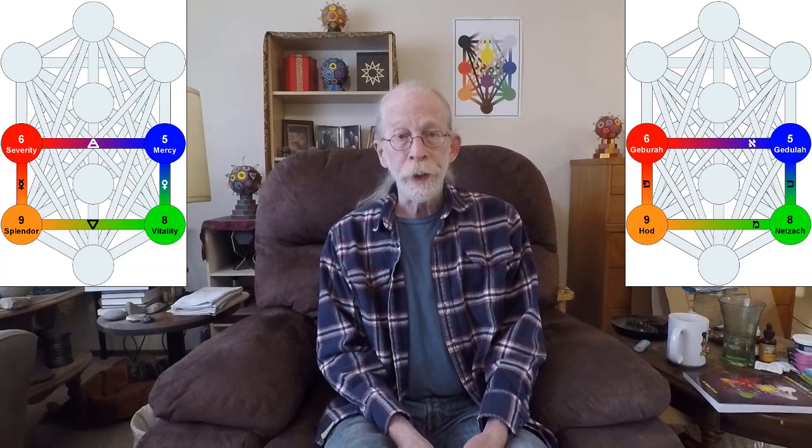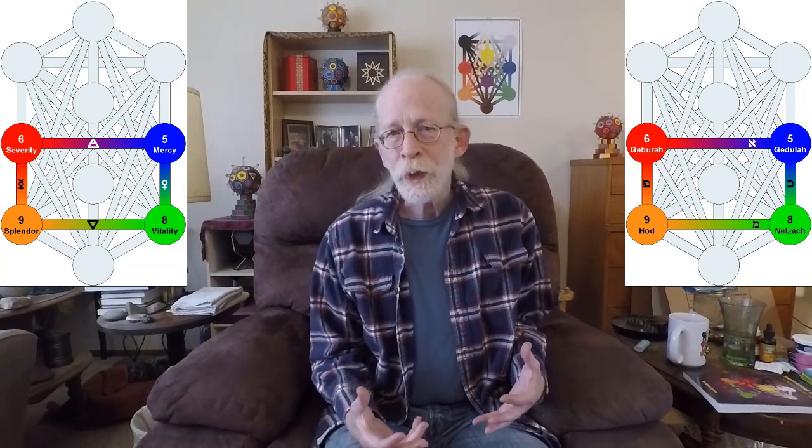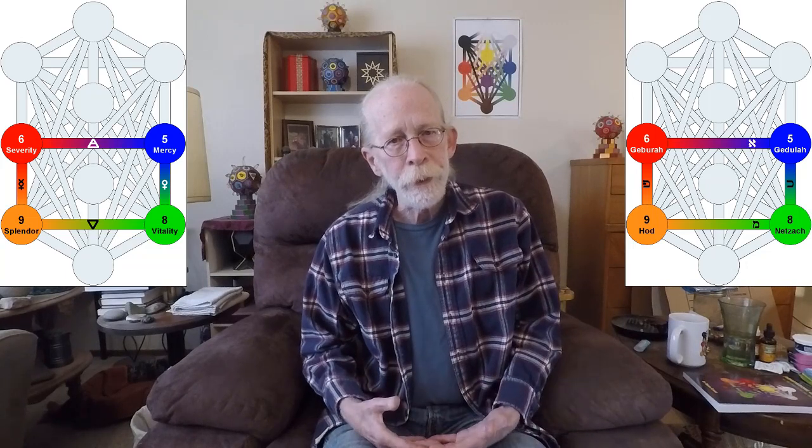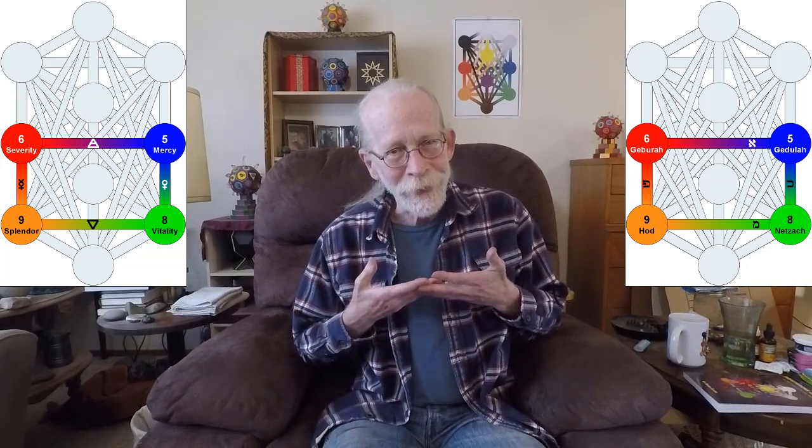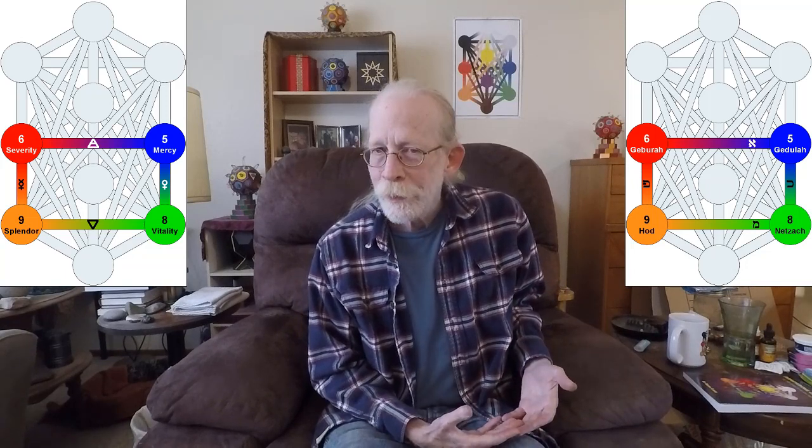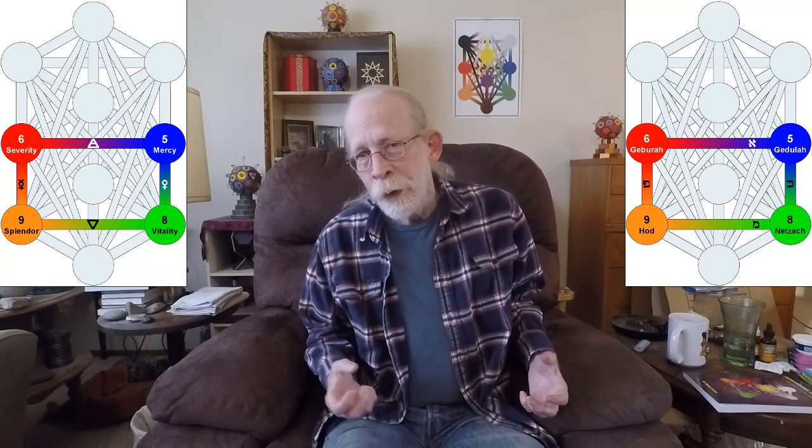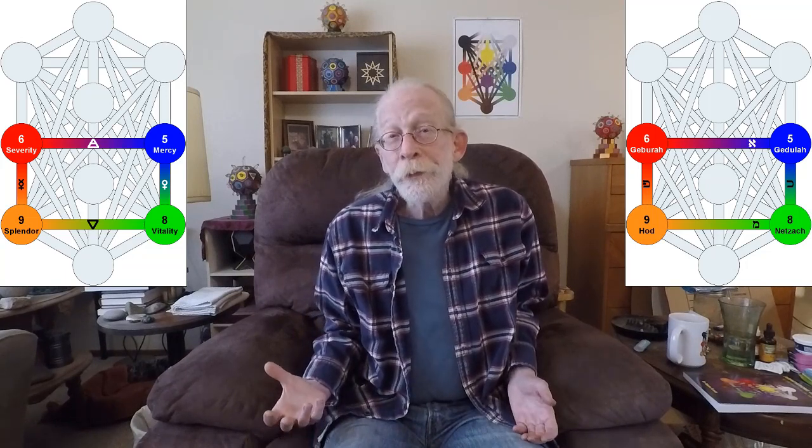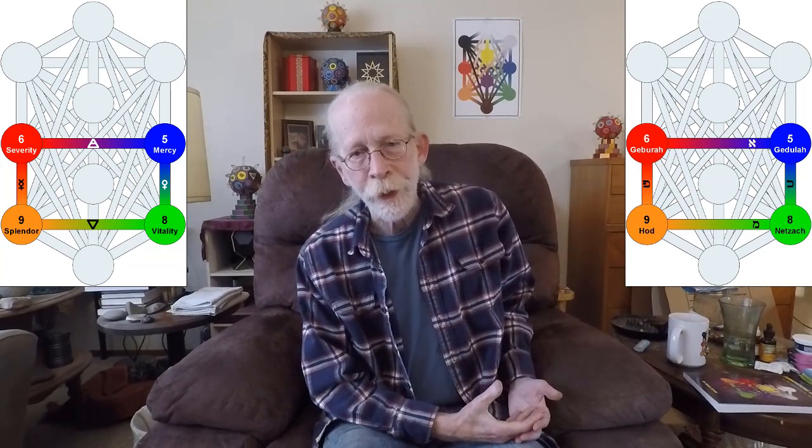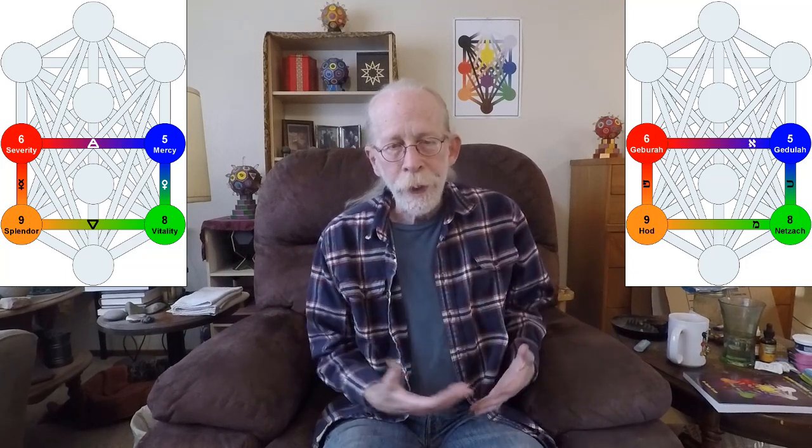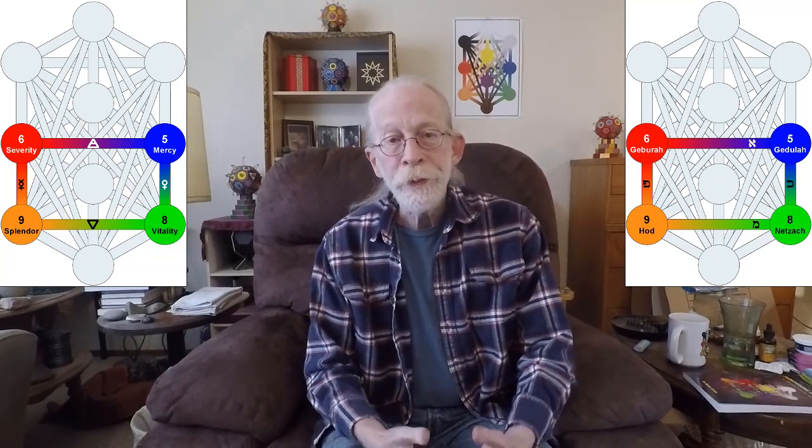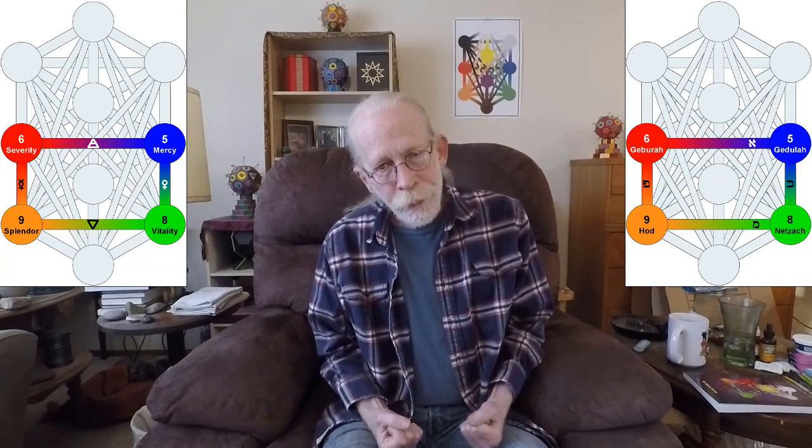So our third gate is a quadrangle, and this talks about the relationship between Mem and Aleph. It starts in Netzach, follows the path of Mem over to Hod, up the path of Mercury to Geburah, cross the path of Aleph to Chesed, and down the path of Venus to Netzach, and then, of course, back around.